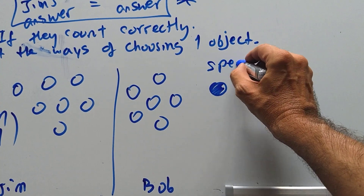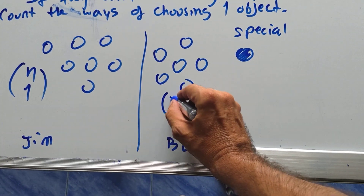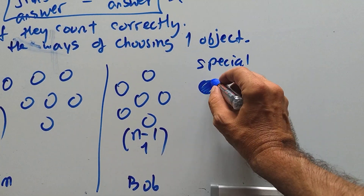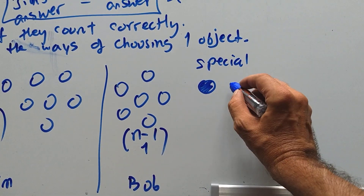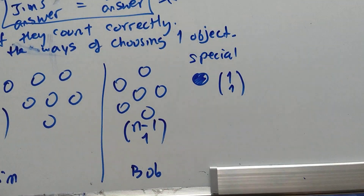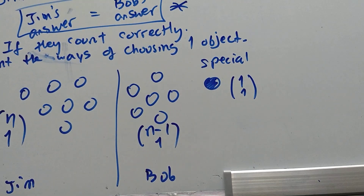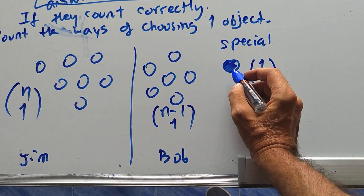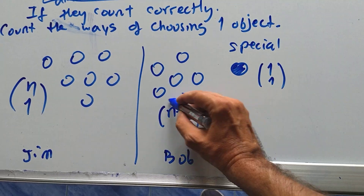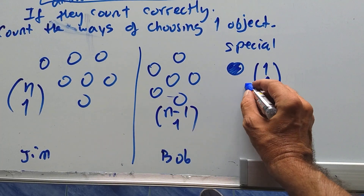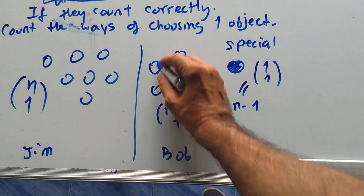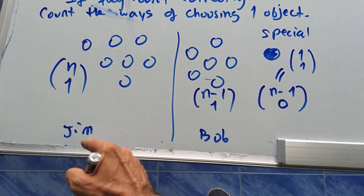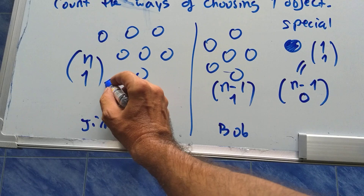Bob has a different strategy — he moves one element over to the side and makes it special. From the remaining n−1 objects, he counts how many ways to choose one, which is (n−1 choose 1). And instead of choosing from the special object, Bob says he chooses nothing from there, which equals (n−1 choose 0). If Jim and Bob both count correctly, then n choose 1 equals (n−1 choose 1) plus (n−1 choose 0).